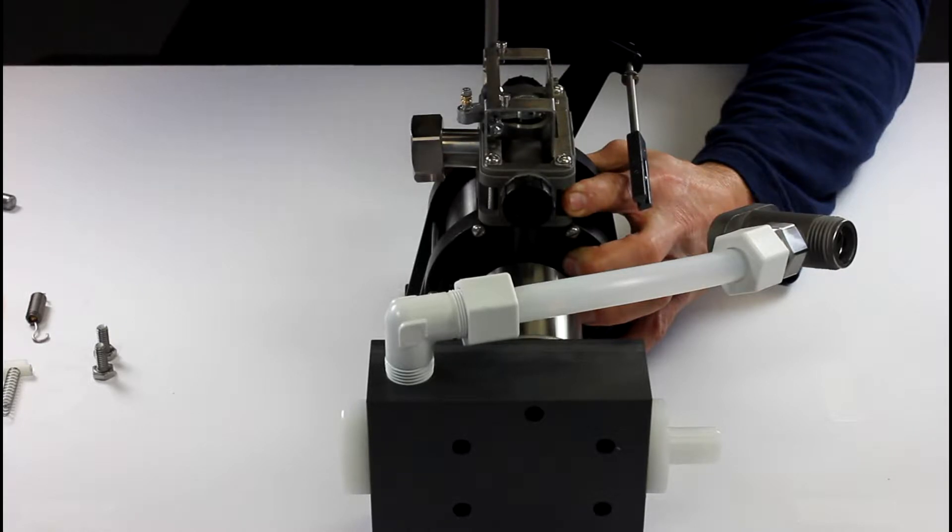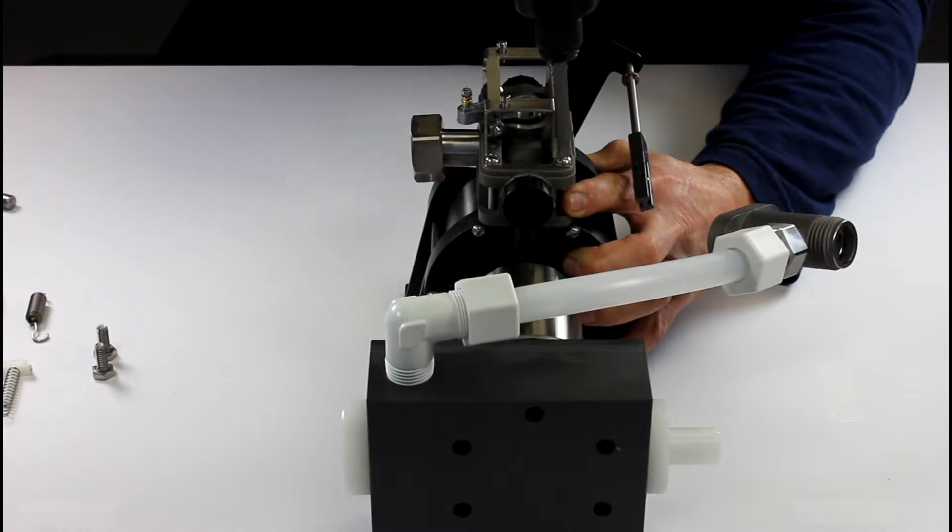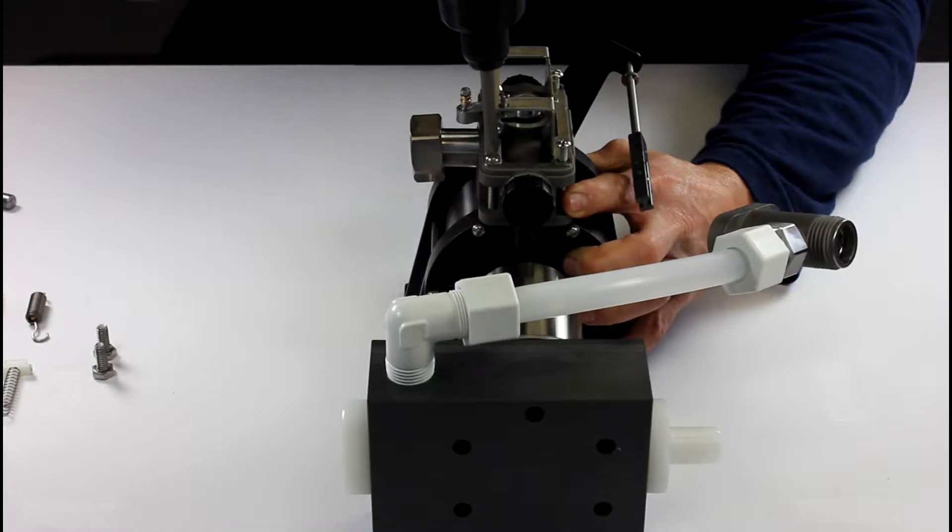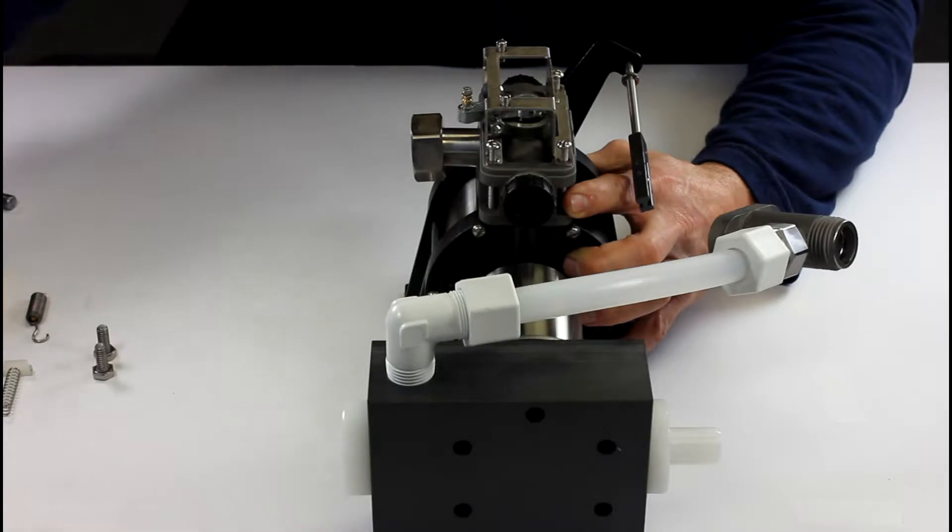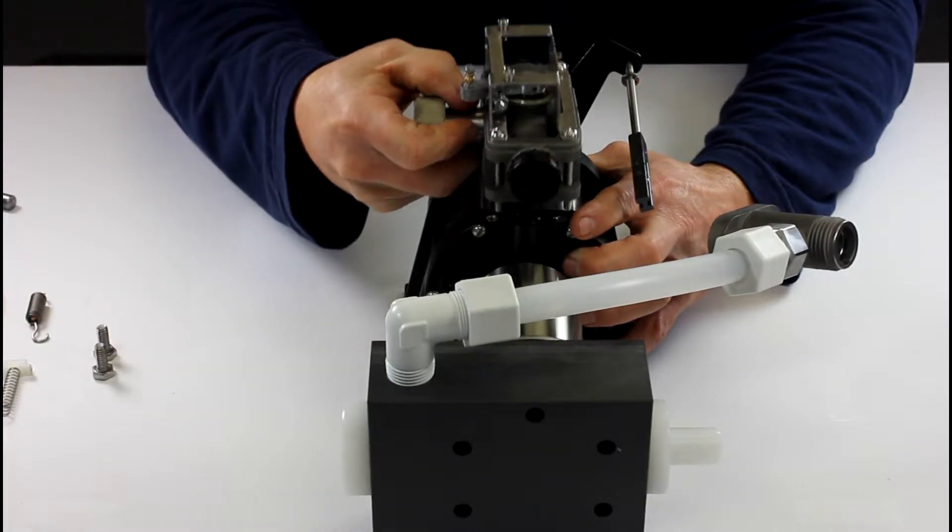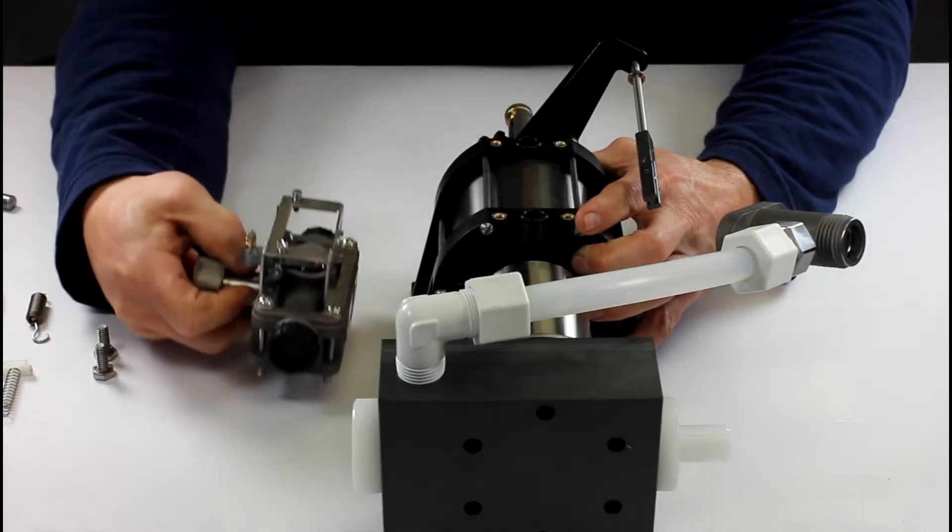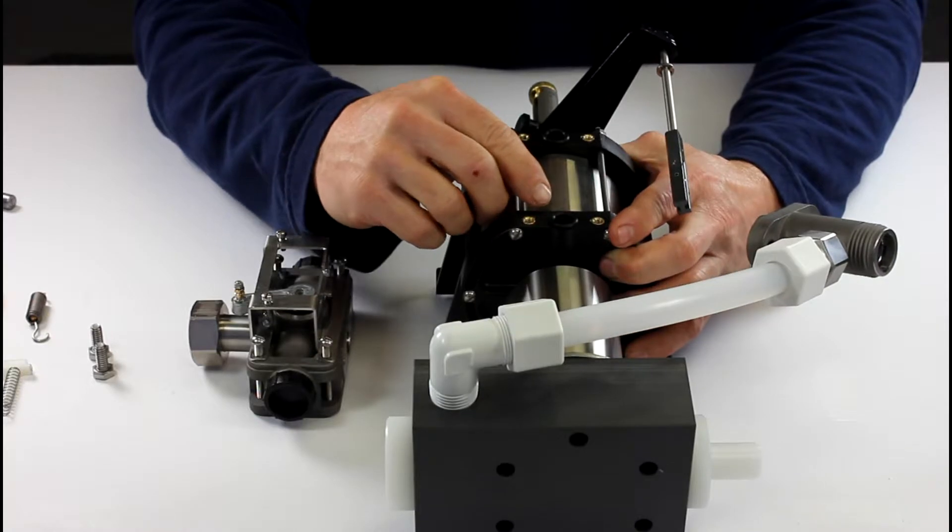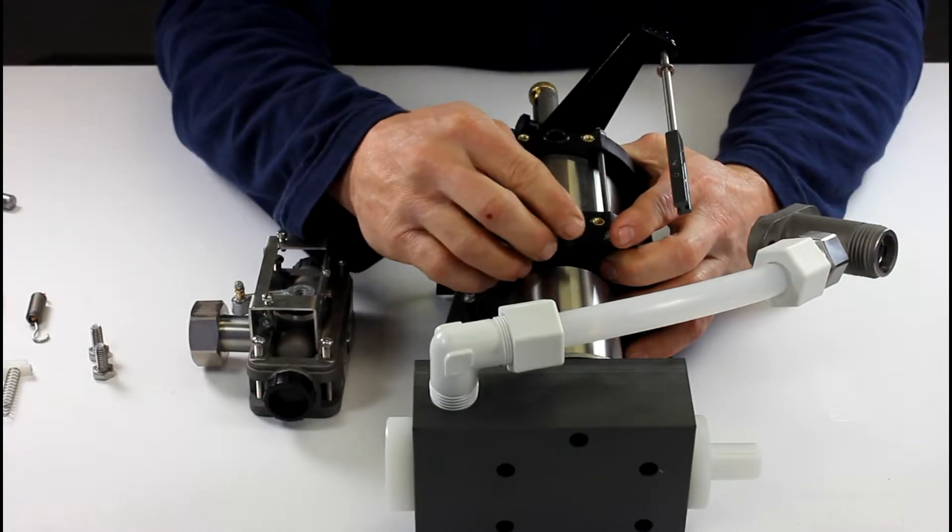Back these screws up. Now you can remove your valve block from your water motor like that.